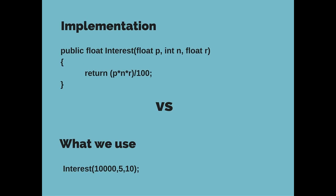Now here you have a code snippet showing you how abstraction is implemented in a program, and this program calculates the simple interest. You have a function called interest which takes in the parameters p (principal), n (number of years), and r (rate of interest). It multiplies them and divides them by 100 to calculate the value of your interest and it returns that value. But all you see in the main program is the function call along with the values of the parameters that are passed.